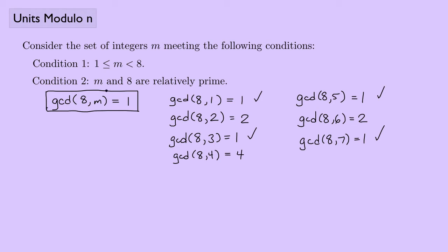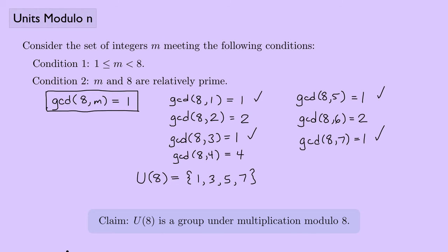So these two conditions narrow down the set of integers to 1, 3, 5, and 7. I'm going to call that U(8). These are the numbers that meet both conditions for the number 8, and they are the same numbers we saw in the previous slide.